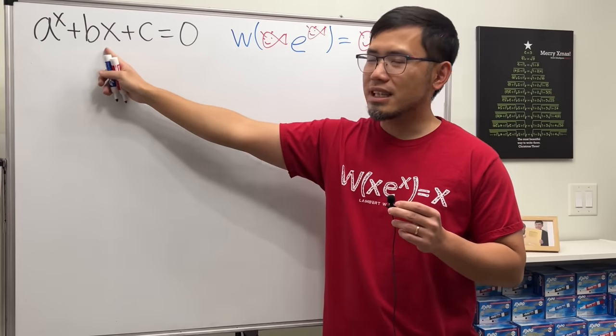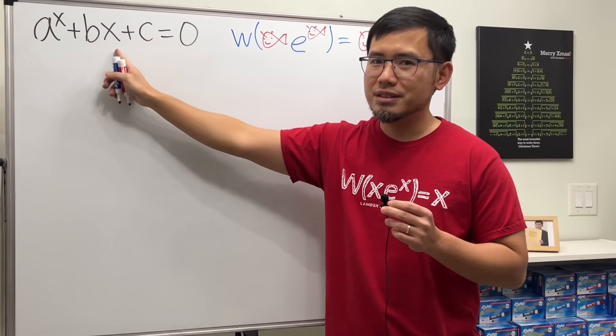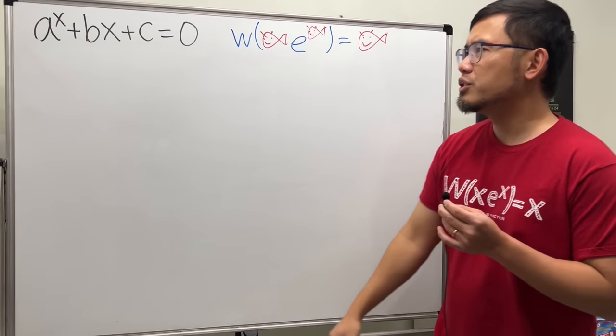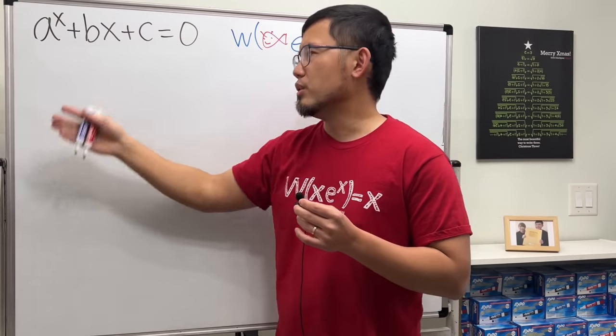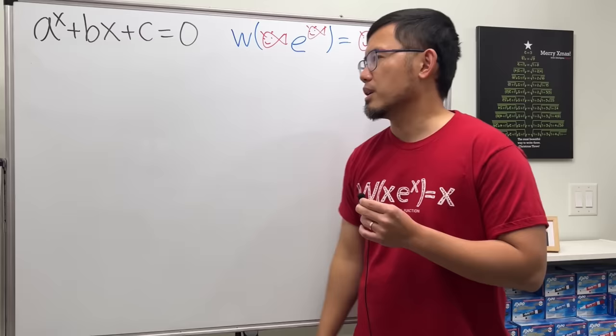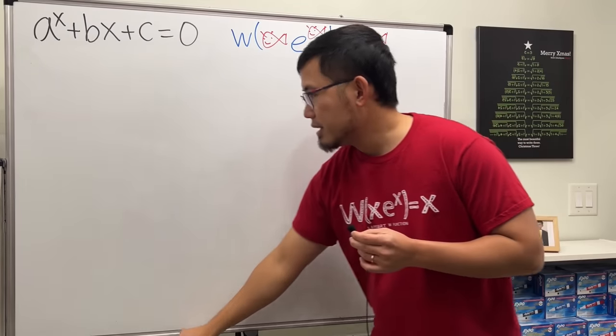So today, let's come up with a general solution for this equation. And then, of course, at the end, I also put down some conditions, such as a cannot be equal to zero, a cannot be equal to one, b cannot be equal to zero, etc., and things like that. Alright, here we go.